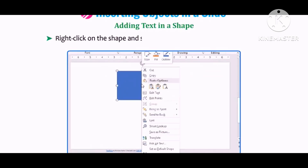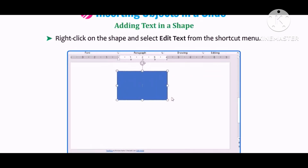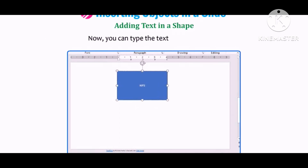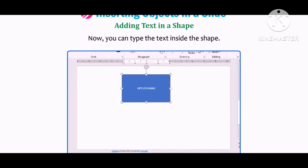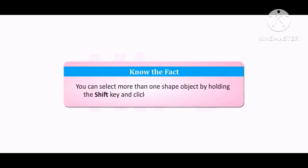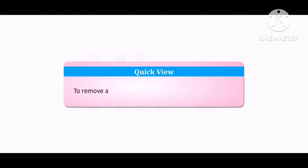Now let us learn how to add text in a shape. Right-click on the shape and select Edit Text from the shortcut menu. The insertion point appears inside the shape and you can type the text. Note that you can select more than one shape by holding the Shift key and clicking the required objects. To remove any shape, select it and press the Delete key.